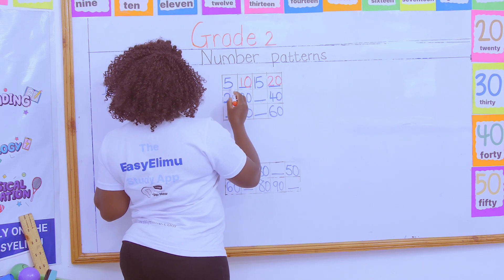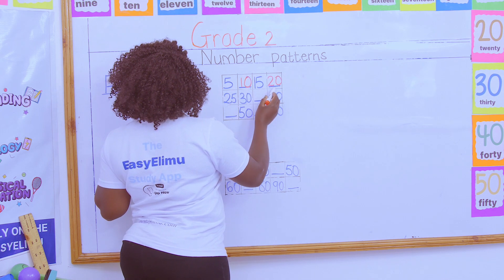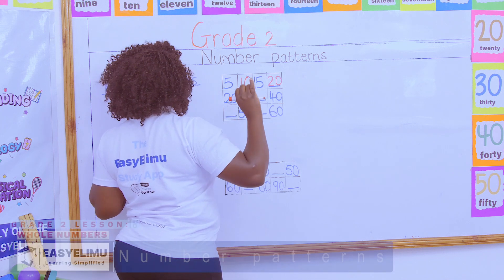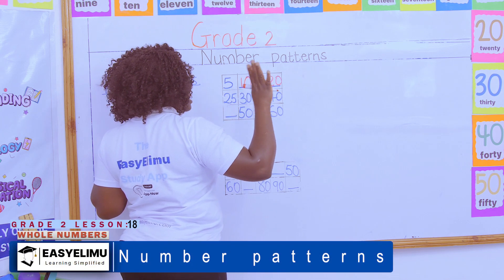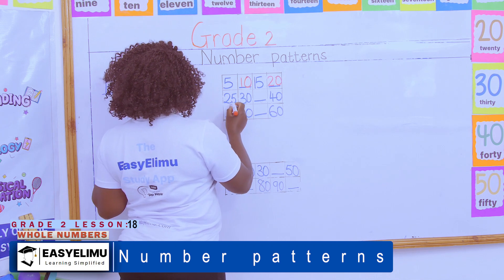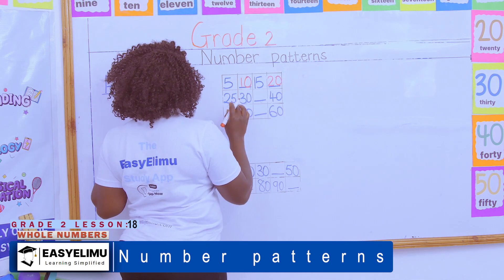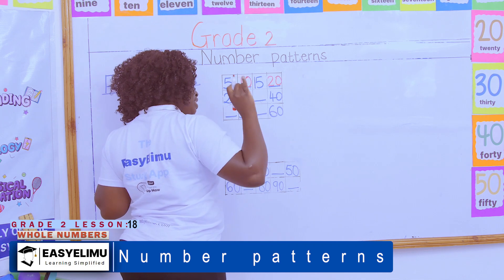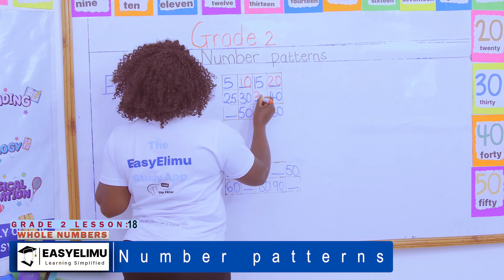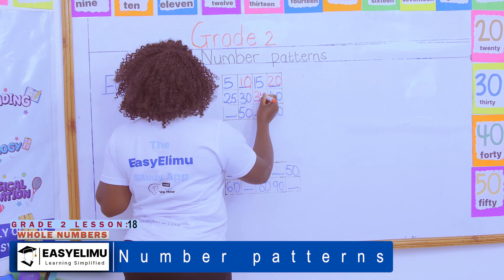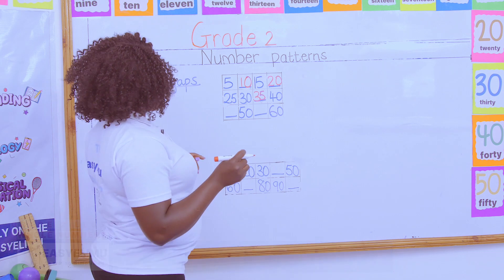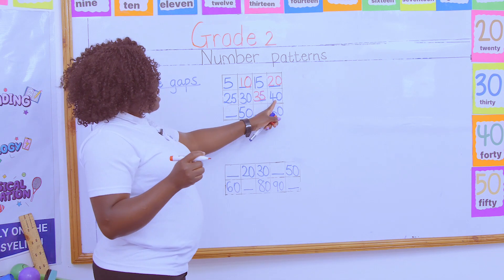Then we say five, ten, fifteen, twenty, twenty-five, thirty. We say thirty-six, thirty-seven, thirty-eight, thirty-nine, forty. No, we are wrong. Twenty-five and then thirty. So we say thirty-one, thirty-two, thirty-three, thirty-four. And the missing number here is thirty-five. So from thirty-five, when you add five, you get forty.